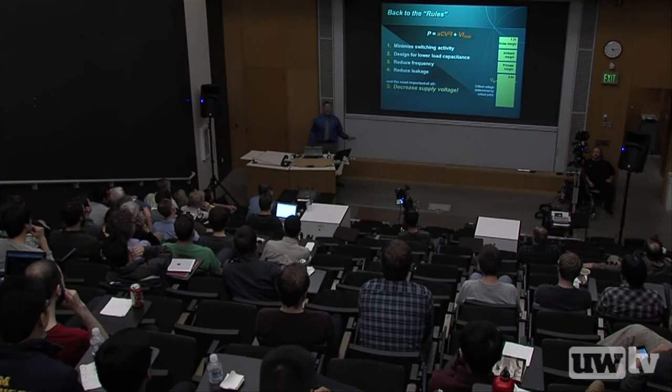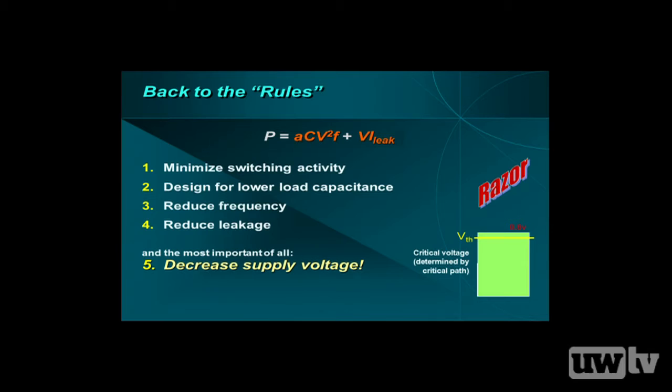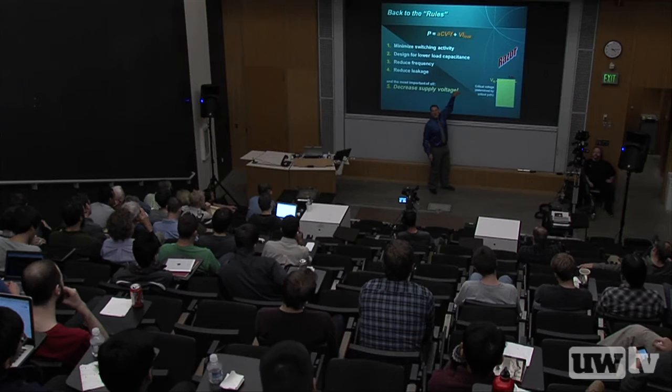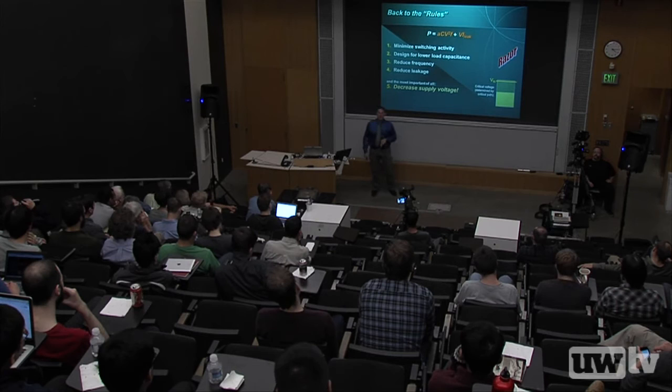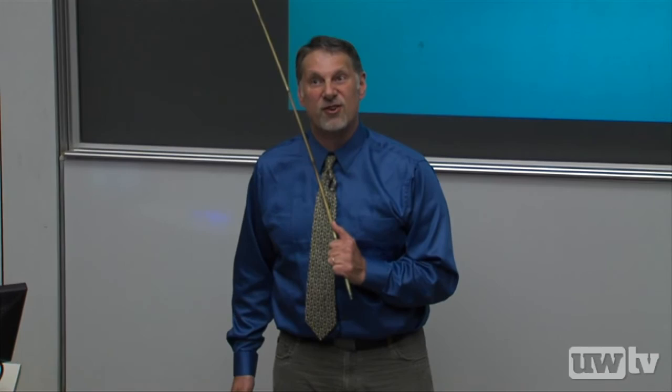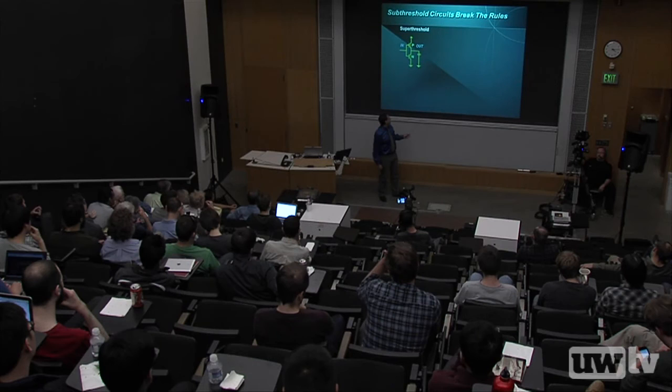Let's go back to the rules. Razor really pushed down the voltage and saved a lot of energy. Then I started to look at going even further — below the threshold voltage. That's called the subthreshold domain. For a long time, people have understood you can operate circuits below the threshold voltage because transistors are not really switches — they're variable resistors, always a little bit on — and we can use that capability to go below the threshold voltage.